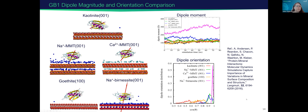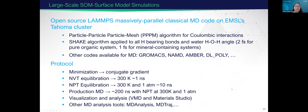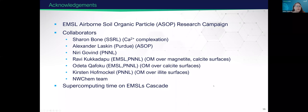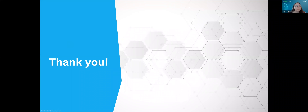We can also do larger biopolymers like proteins. This is just showing the GB1 protein interacting with five different types of mineral surfaces and looking at the dipole moment orientation as a function of time. On the Tahoma system, we have a number of classical molecular dynamics codes available, including LAMMPS, GROMACS, NAMD, and AMBER. I'd like to acknowledge my collaborators for this work — thank you for your attendance.